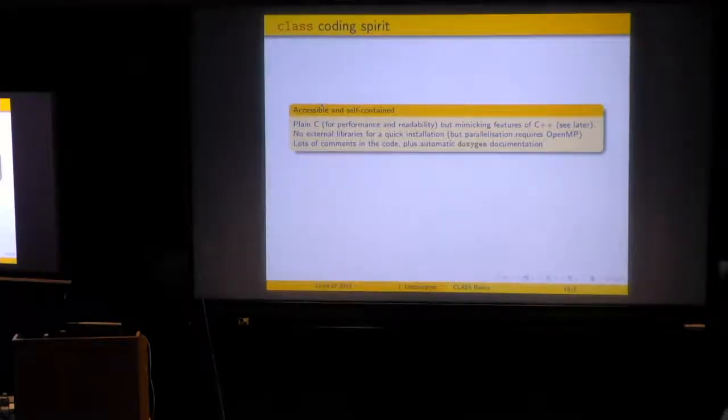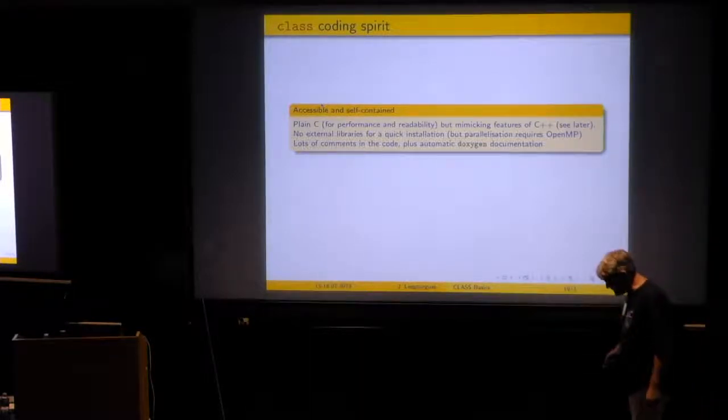And P_k would be in megaparsec to the 3, unless you manipulate the output to get this divided by small h to the 3. Okay, so it means that in the code you don't find everywhere the units written because it is assumed that it is megaparsec to some exponent. Okay, so to get a code which is accessible and self-contained, we choose to use plain C, but with a style mimicking C++. I will explain why, concretely, and you could say, but why do you use plain C mimicking C++ and not directly C++? Yeah, maybe it would have been a good choice to use C++. I have no strong opinion on this. Maybe we will do it at some point.